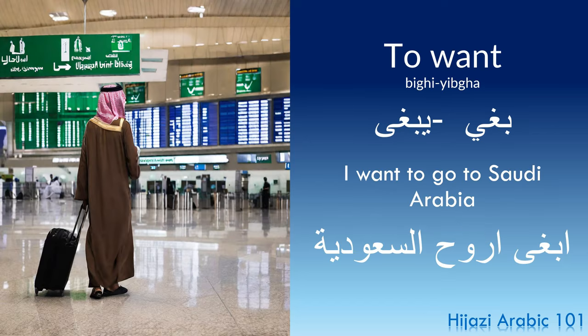To want. Past tense: biri. Present tense: yibra. Example: 'I want to go to Saudi Arabia' — 'Abra arouh as-suradiyya.' It's important to note that the past tense form biri isn't really used. When we want to say 'I wanted something,' we say 'kunt abraa.' For example: 'Ana kunt abraa,' 'Huwa kan yibra,' 'Hiya kanat tibra.' You use the verb 'kan' in the past tense plus the present tense form of the verb yibra.